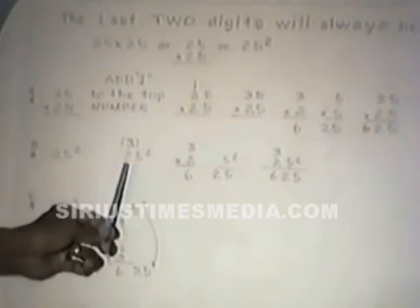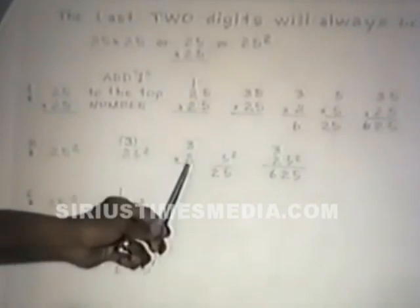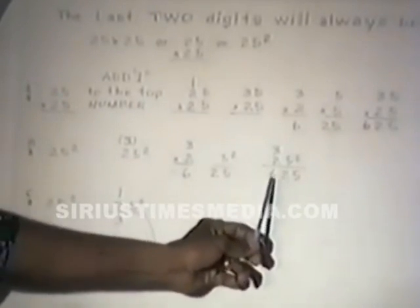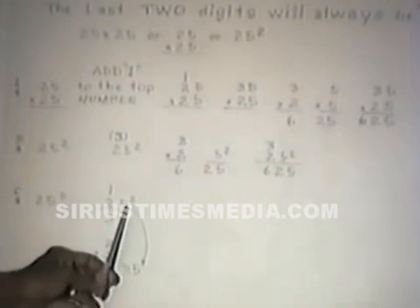Let's go over the steps: for 25 squared, we change the 2 to a 3 by adding 1. Then 3 times 2 is 6, and 5 times 5 is 25. The answer is 625.